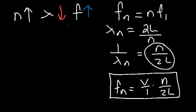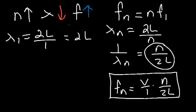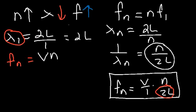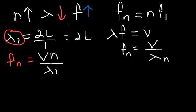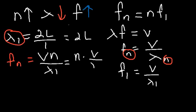We have the equation for the wavelength: the wavelength equals 2 times L divided by n. So 1 over lambda n is the reciprocal, which is n over 2L. Replacing this expression, fn equals v over 1 times n over 2L. Now, lambda 1 equals 2L divided by 1, which is simply 2L. So we can replace 2L with lambda 1, giving fn equals v times n divided by lambda 1. Since f1 equals v divided by lambda 1, we can rewrite this as fn equals n times f1.